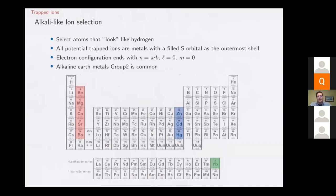It turns out that there are a lot of atoms that spectroscopically look like hydrogen. Some of them are highlighted here — they tend to be alkali-like ions based solely on spectroscopy. When you put these atoms in a magnetic field and shine different energy photons on them, you can get energy behavior that looks very much like a hydrogen atom, even though they have many more neutrons, protons, and electrons.